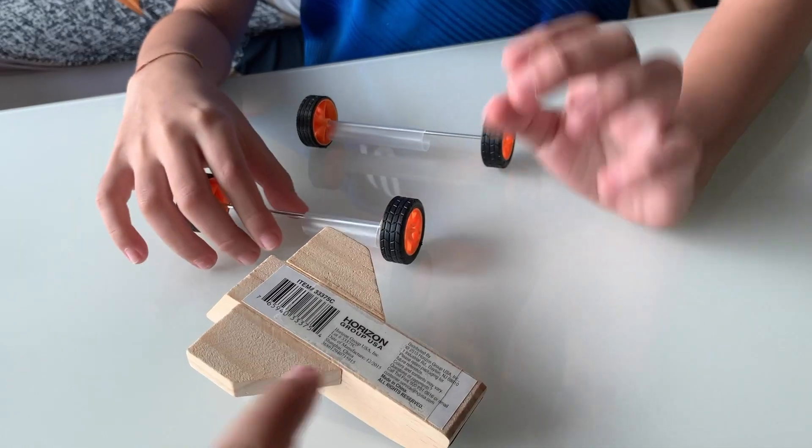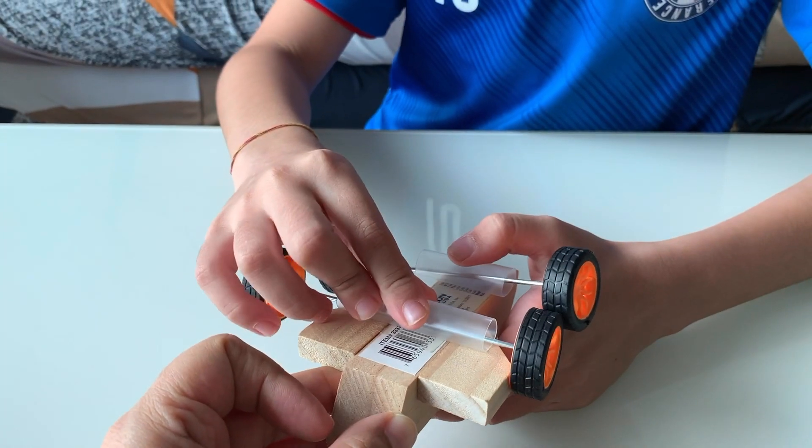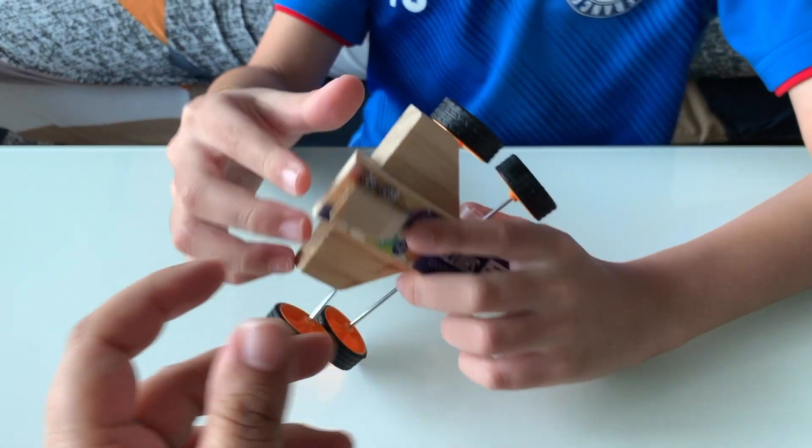Let's stick it to here. I did tape here. Now we are going to add the axles. We have added the axles. Let's see if it can roll.